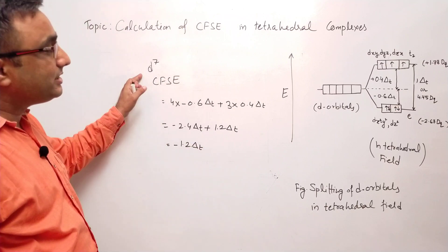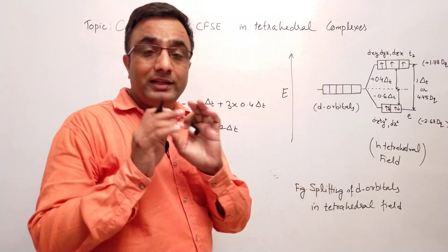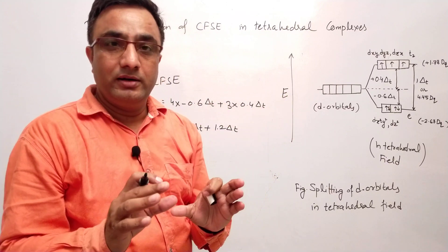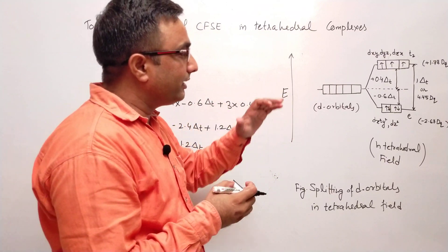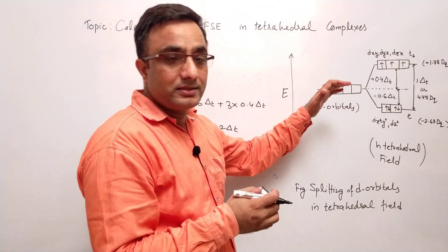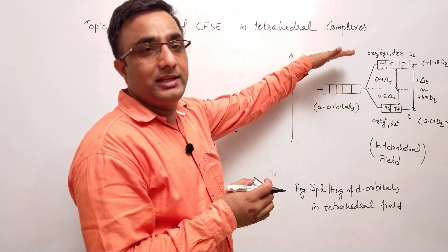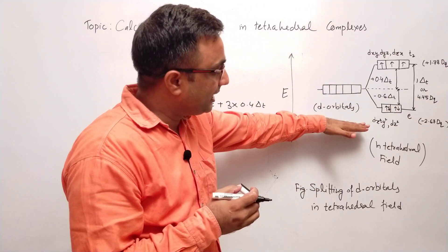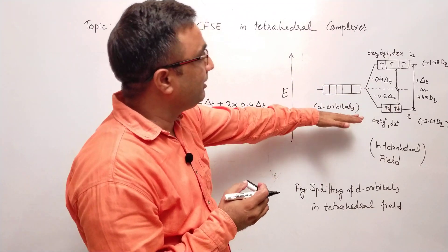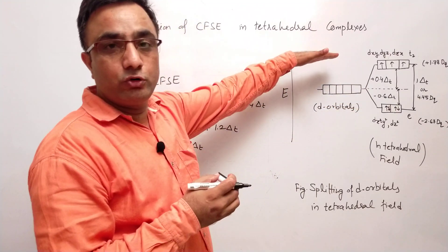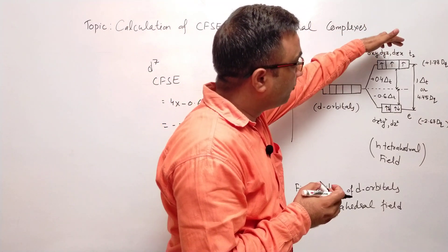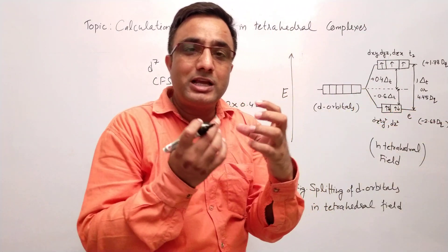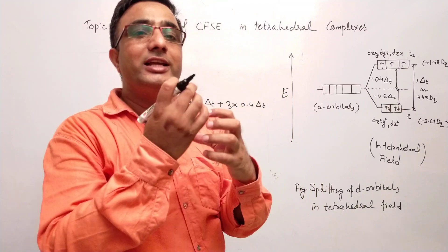So CFSE in case of D7, whether weak field or strong field, it doesn't matter. In case of a tetrahedral complex, the electronic arrangement will be: first electron lower energy level, second electron lower energy level, then the third electron goes to higher energy, fourth, fifth, then sixth, then seventh. This is the electronic arrangement for D7 tetrahedral complex.